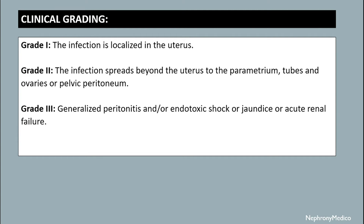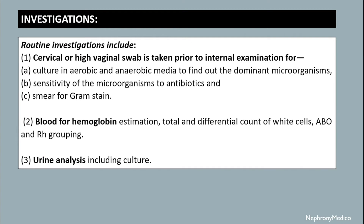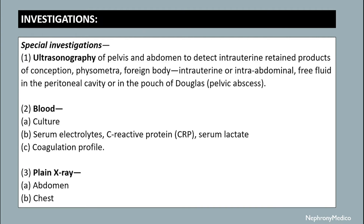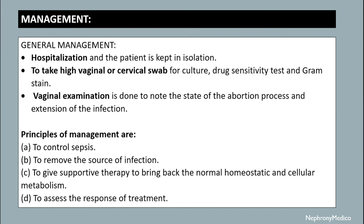Investigations: routine investigations include cervical or high vaginal swab, blood for hemoglobin estimation, and urinalysis including culture. Special investigations include ultrasonography of the pelvis and abdomen, blood for culture, serum electrolytes, CRP, serum creatinine, coagulation profile, and plain X-ray of the abdomen and chest.